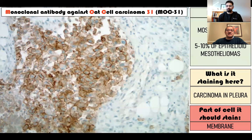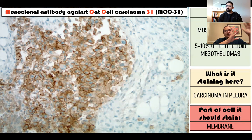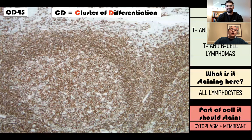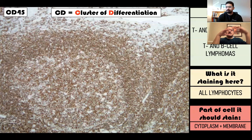Another stain used in lung pathology is MOC31. This is a non-mesothelial stain - it stains adenocarcinomas and other tumors, not mesothelioma. The name comes from monoclonal antibody against oat cell carcinoma 31 - oat cell carcinoma is an old name for small cell. It was discovered on small cell carcinomas and became known as a general purpose carcinoma marker. MOC31 is a membrane stain commonly used for the differential of mesothelioma versus adenocarcinoma. Then all the CDs - CD stands for cluster of differentiation, and all those markers are located on the cell membrane. Virtually every CD marker should be positive on the cell membrane.